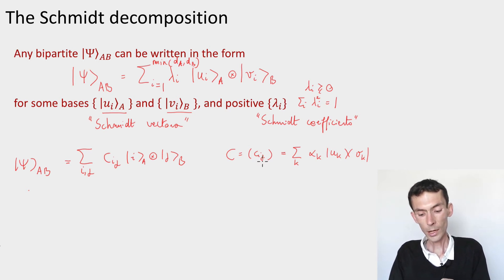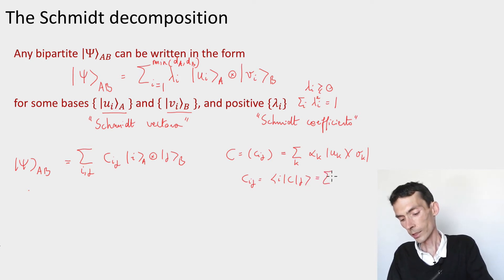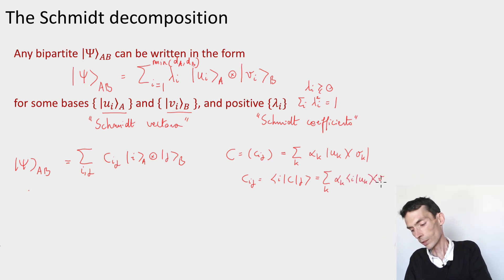Now the coefficients cij, they were the coefficients of the matrix C in the standard basis. So how do I recover them? Cij is equal to the ij-th coefficient of the matrix C by definition. And now using my new form there, I can write it as the sum over k, alpha k, i uk, vk j.